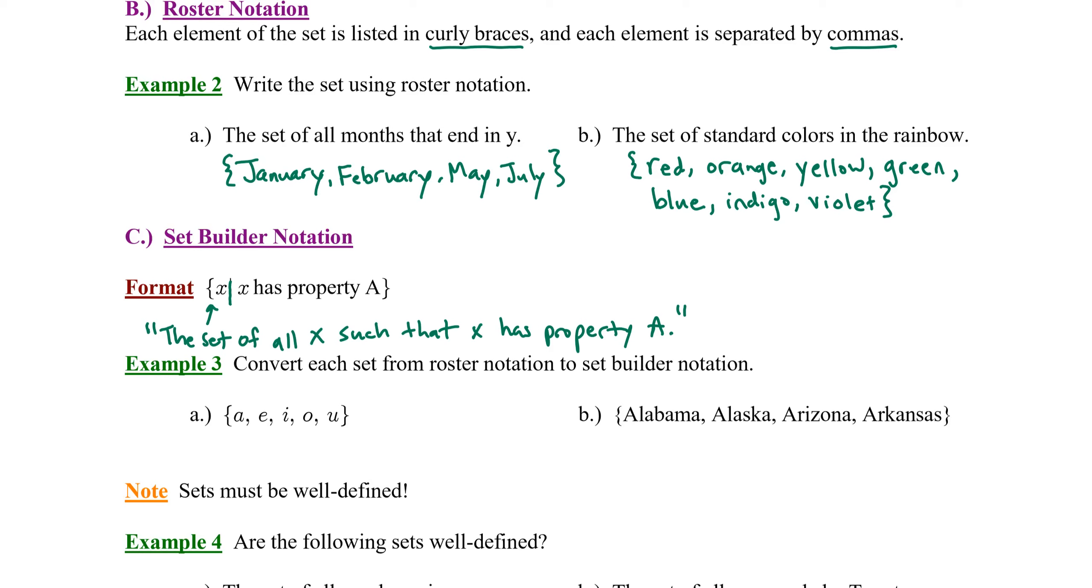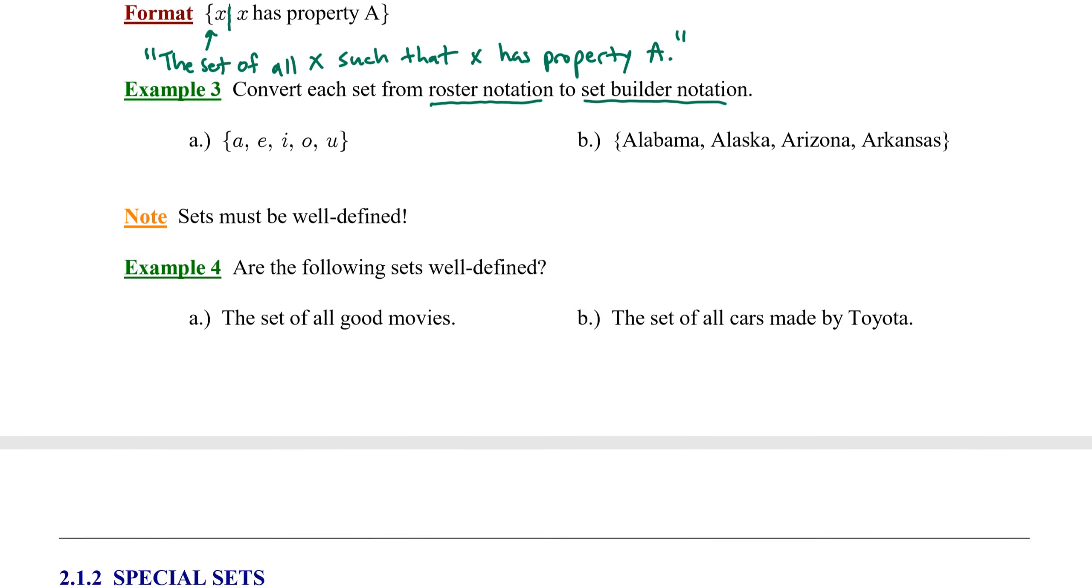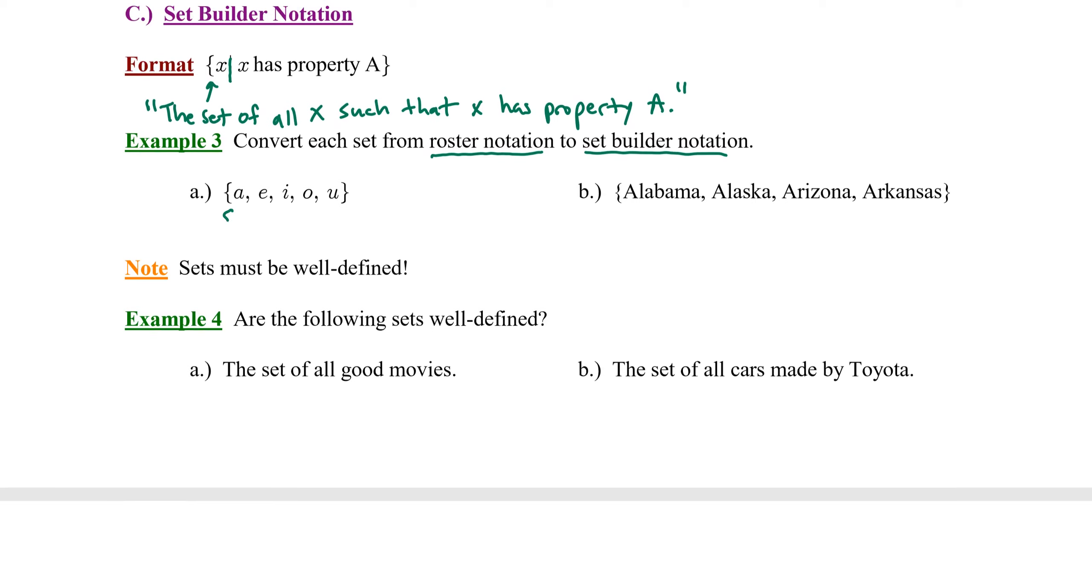Example 3. Convert each set from roster notation to set builder notation. Notice the elements are already listed in roster notation, and we're converting it to this new format called set builder notation. Now think about a class roster. A class roster will list every single person in the class in a list format. That is a roster. And that's what we see here with the first set. The set A-E-I-O-U. We have the roster of elements in that set.